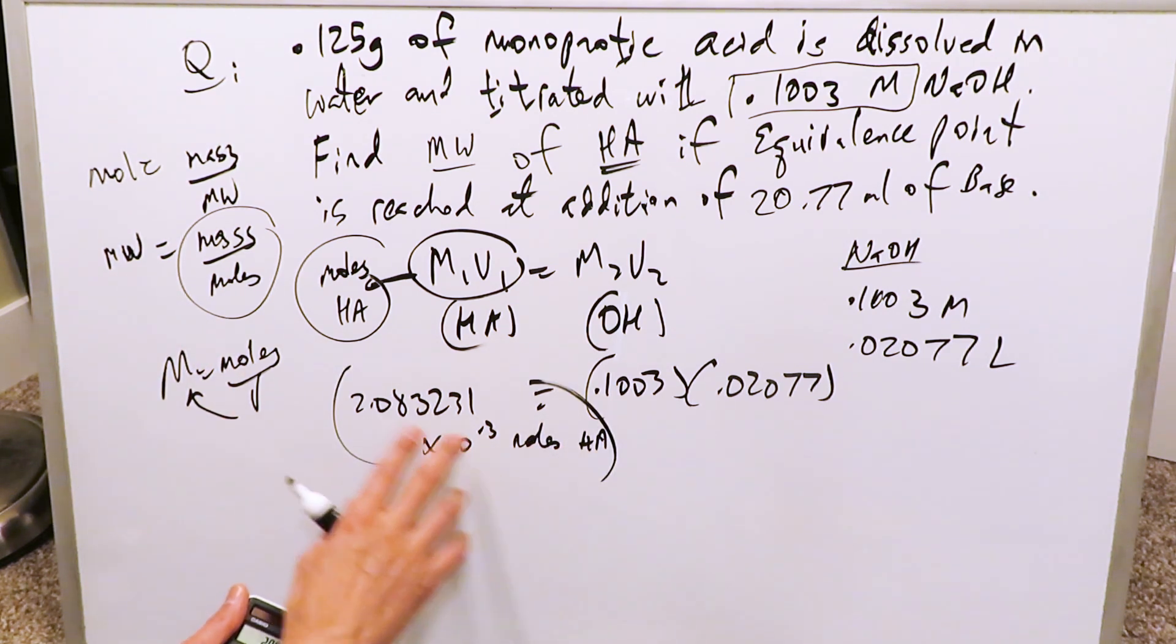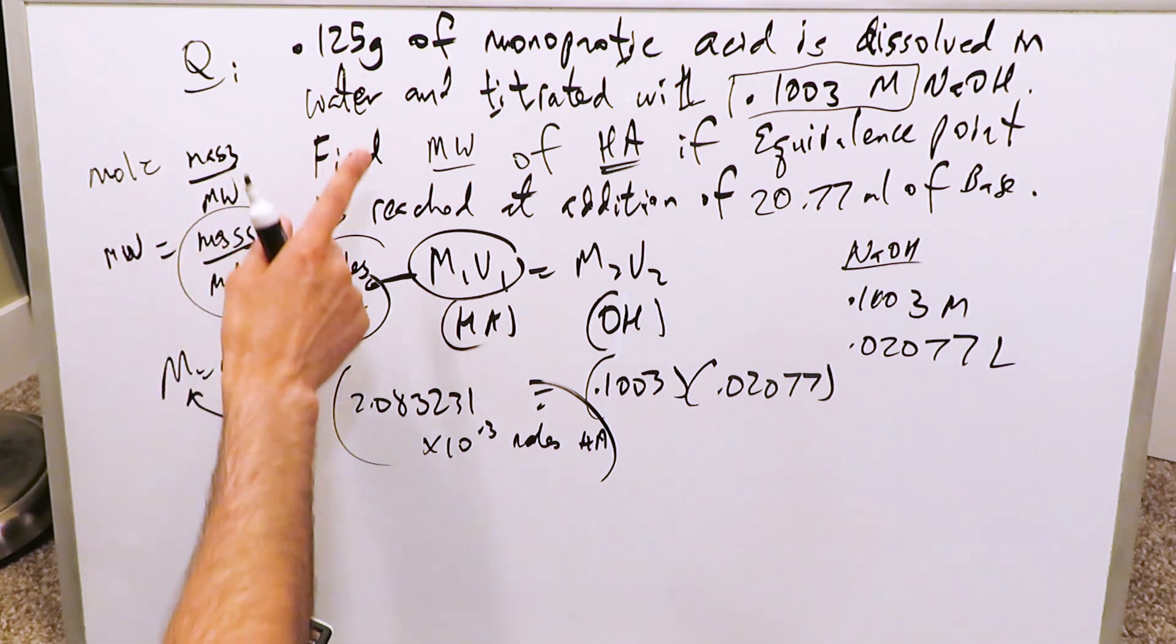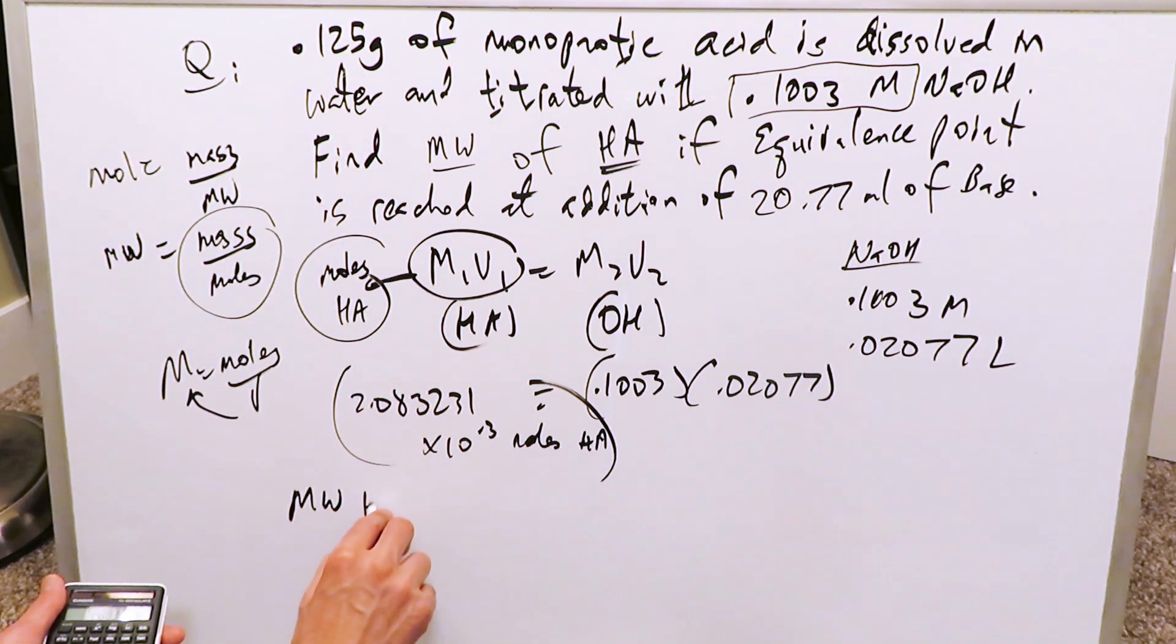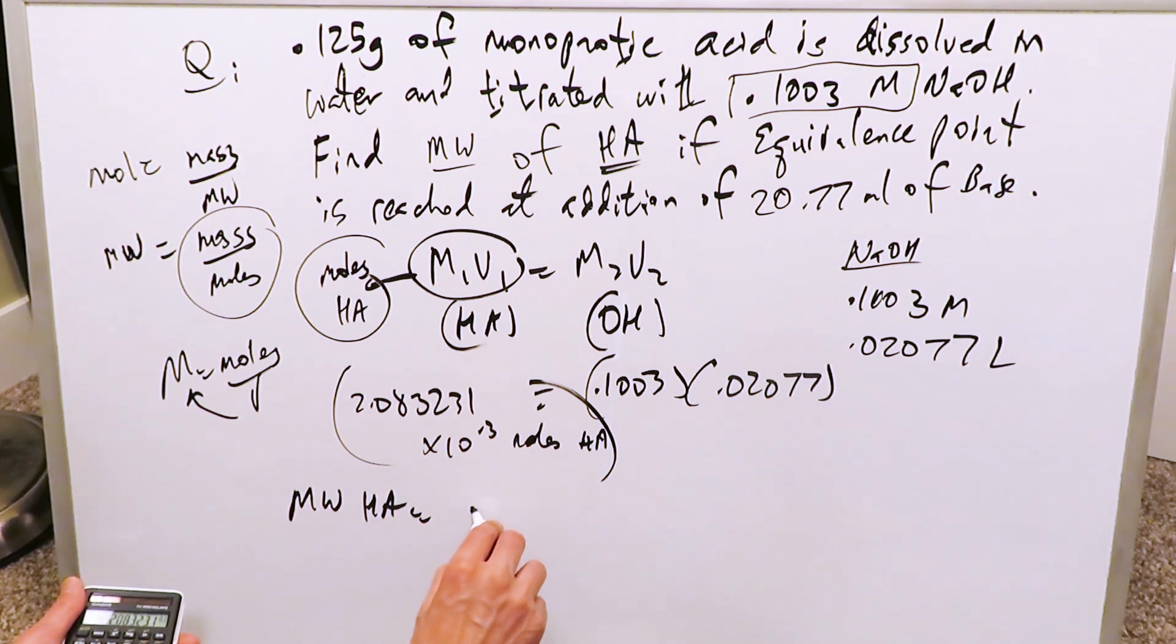All I have to do is take this value and divide it from the mass, and I'll get my molar weight. So the molecular weight of the acid is equal to your mass, which is 0.125 grams, which is this item here, divided by this.